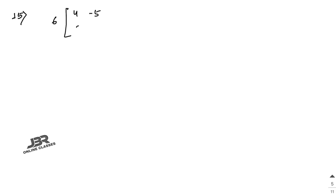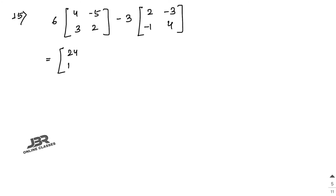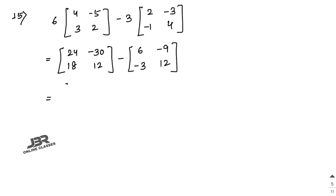Sum number 15: Compute 6×[4, 3; -5, 2] minus 3×[2, 1; -3, 4]. Multiply 6: [24, 18; -30, 12]. Multiply 3: [6, 3; -9, 12]. Subtract: [24-6, 18-3; -30+9, 12-12] = [18, 15; -21, 0]. Wait — [18, -21; 21, 0] — that is your answer.